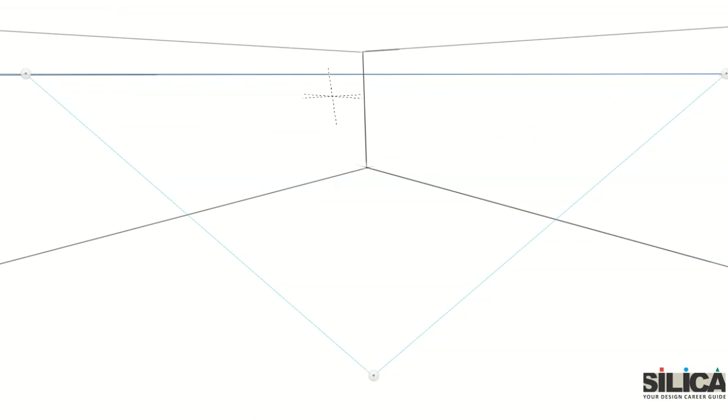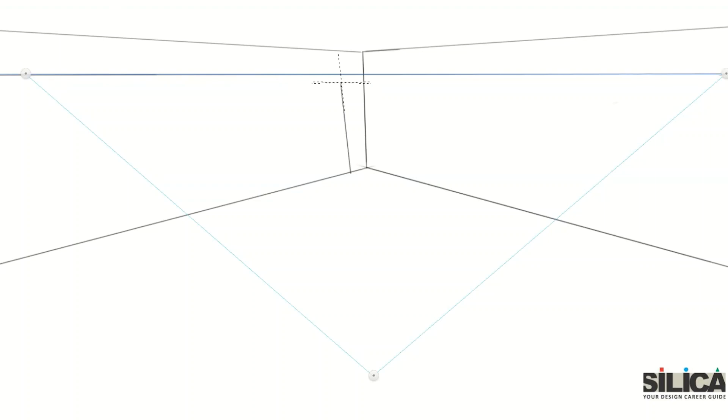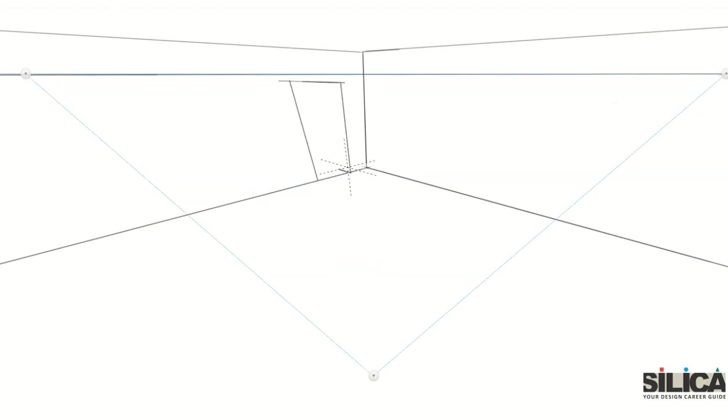Three-point perspective is considered an odd view because all the lines will diagonally merge in the third point. In earlier videos on one-point and two-point perspective, we have seen the height of the door is vertical and parallel. Now here, as I'm drawing a door in three-point perspective, the door's height will diagonally merge in the third point.